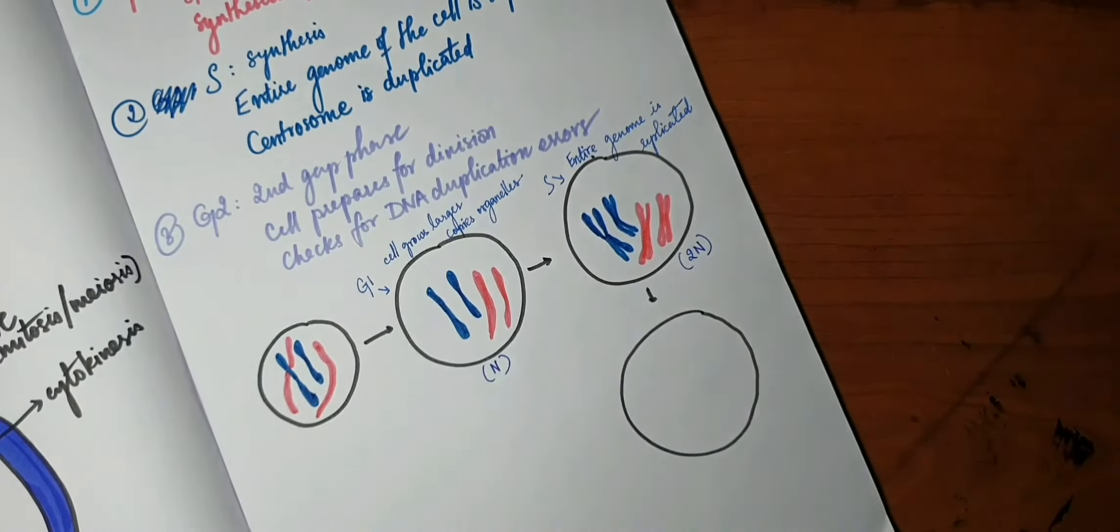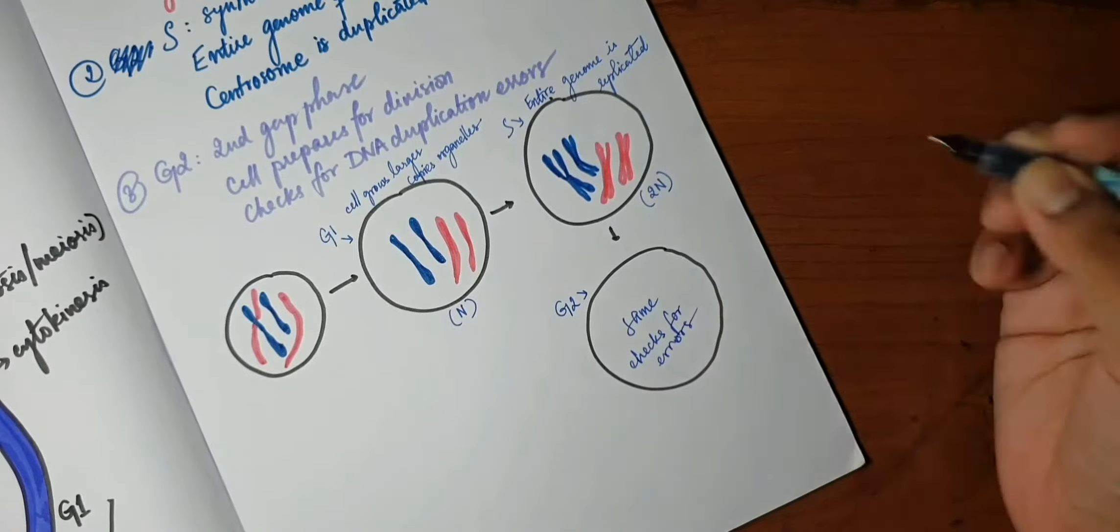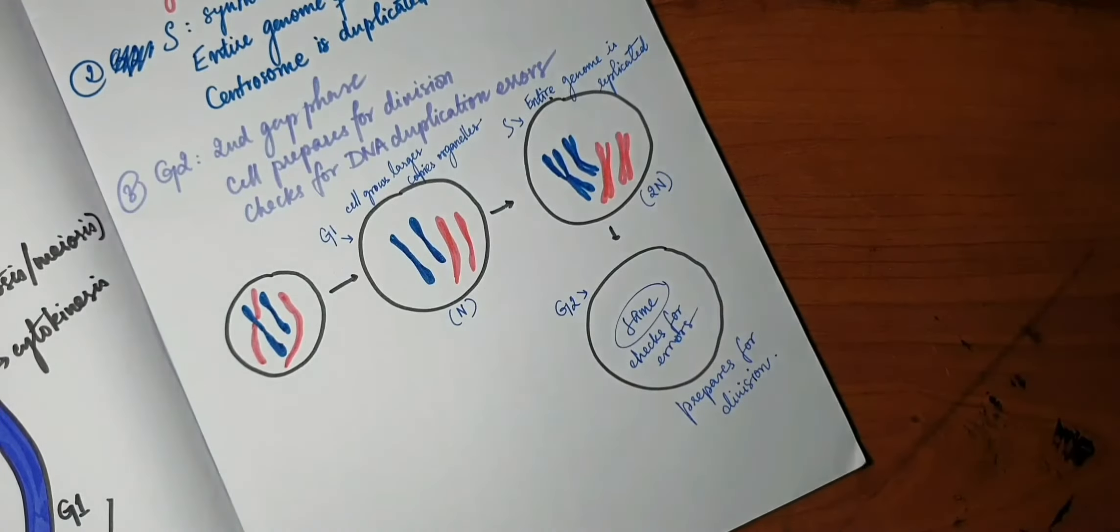So if in G1 the material was n, the genetic material is 2n in S phase. In G2, the genetic material remains the same, but it starts checking for errors and prepares for division.